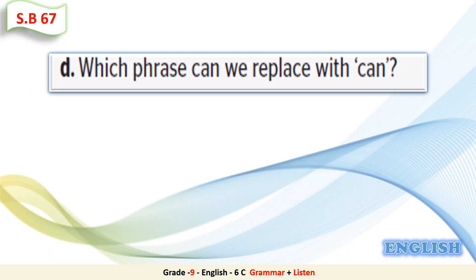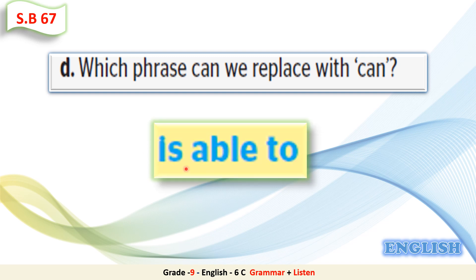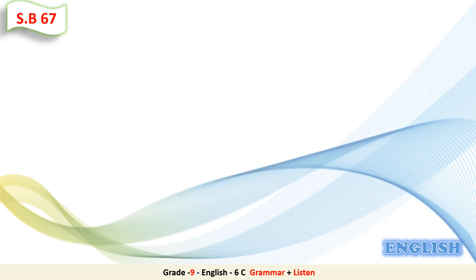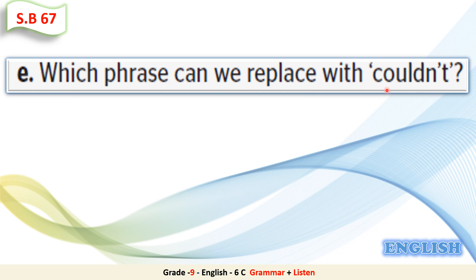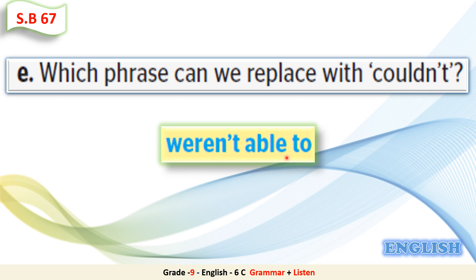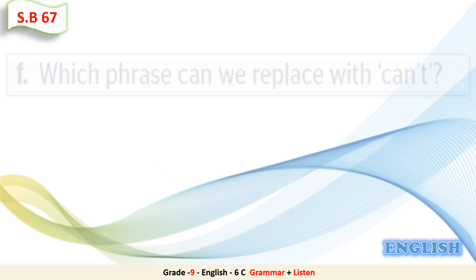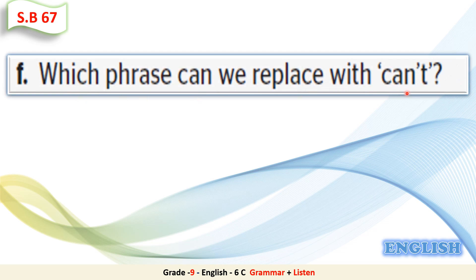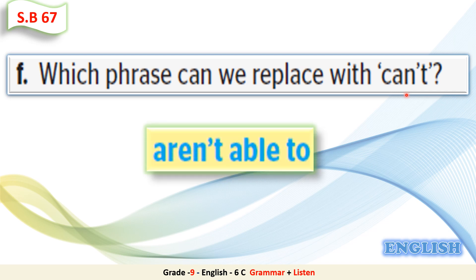Question D: Which phrase can we use to replace 'can'? The answer is 'is able to' – or 'am' or 'are able to' – which can replace the verb 'can' to express ability. Question E: Which phrase can we replace with 'couldn't'? It's 'weren't able to,' and of course 'wasn't able to' can also be used. Question F: Which phrase can we replace with 'can't'? It's 'aren't able to.' You can also use 'isn't able to' or 'I'm not able to' to replace 'can't.'